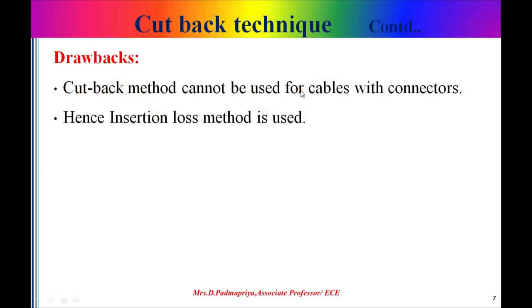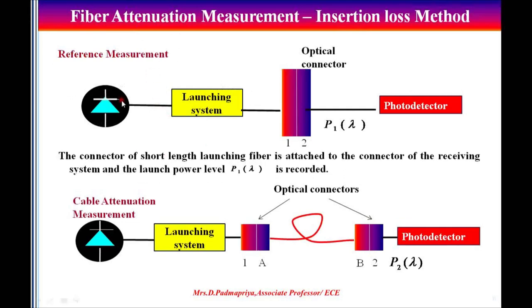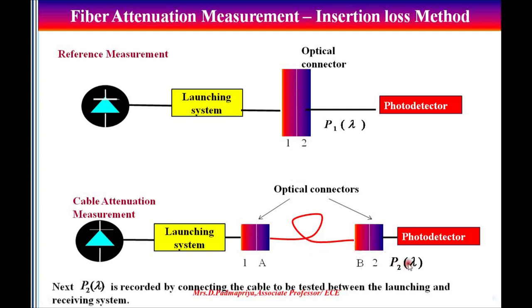There are certain drawbacks in the cutback technique. One is it cannot be used for cables with connectors; that is, if two or more cables are joined with the help of connectors, then this cutback technique method cannot be followed. Hence the insertion loss method is followed. In the insertion loss method, the launch and detector couplings are made through the connectors. First, the connector of a short length launching fiber is attached to the connector of the receiving system and the power level P1(λ) is recorded. Next, P2(λ) is recorded by connecting the cable to be tested between the launching system and the receiving system. By substituting P1(λ) and P2(λ) in the formula, the attenuation can be calculated.